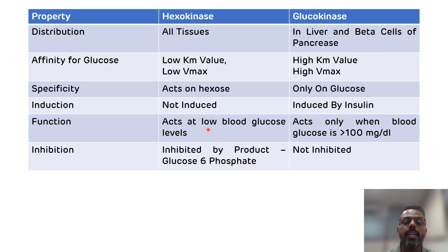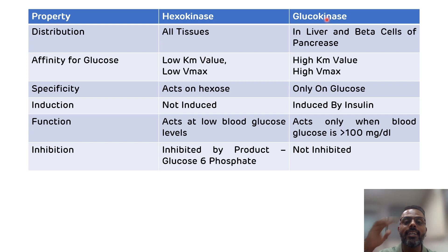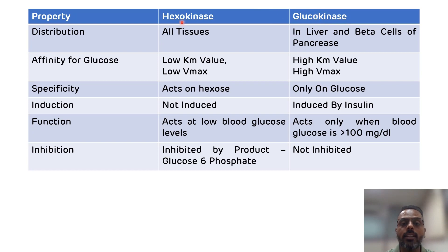Hexokinase acts at low blood glucose levels, while glucokinase acts only when the blood glucose level is greater than 100 mg per deciliter. This means glucokinase plays a role in regulating blood glucose levels.